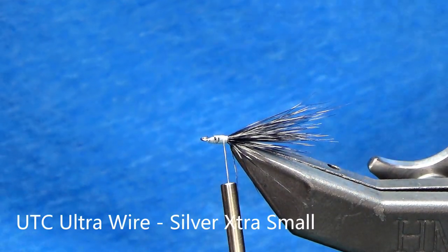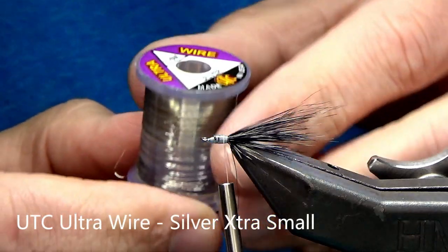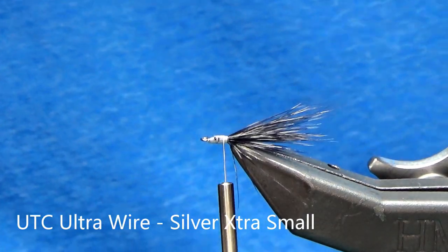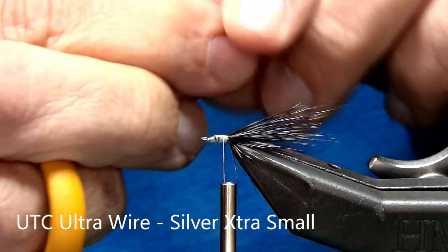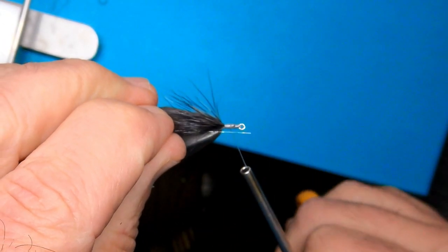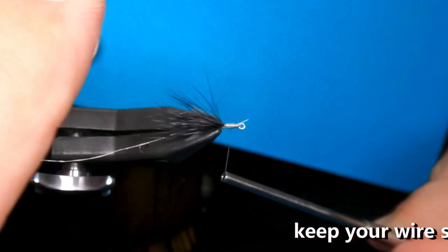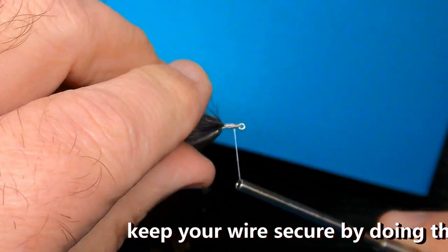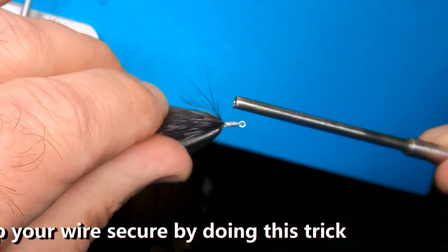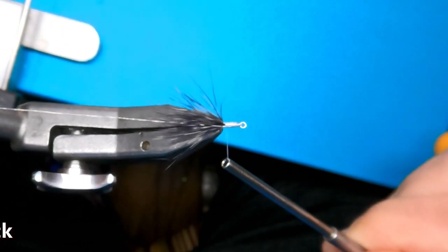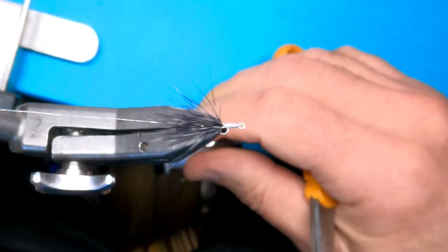Next, I'm going to put in a little bit of wire. This just happens to be ultra wire. It's extra small. You could use small. All I'm going to do, this is going to help keep my schlappen in place, my grizzly schlappen, which I'll put in in just a second. I just folded that wire over on top of itself, which will keep it slipping out. That looks good.